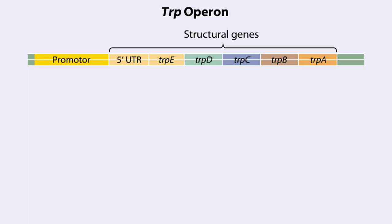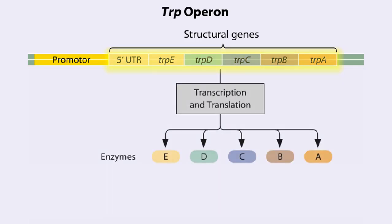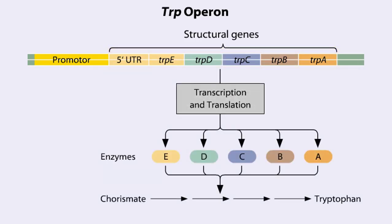The Trp Operon in E. coli contains five structural genes corresponding to enzymes that convert chorismate into tryptophan.